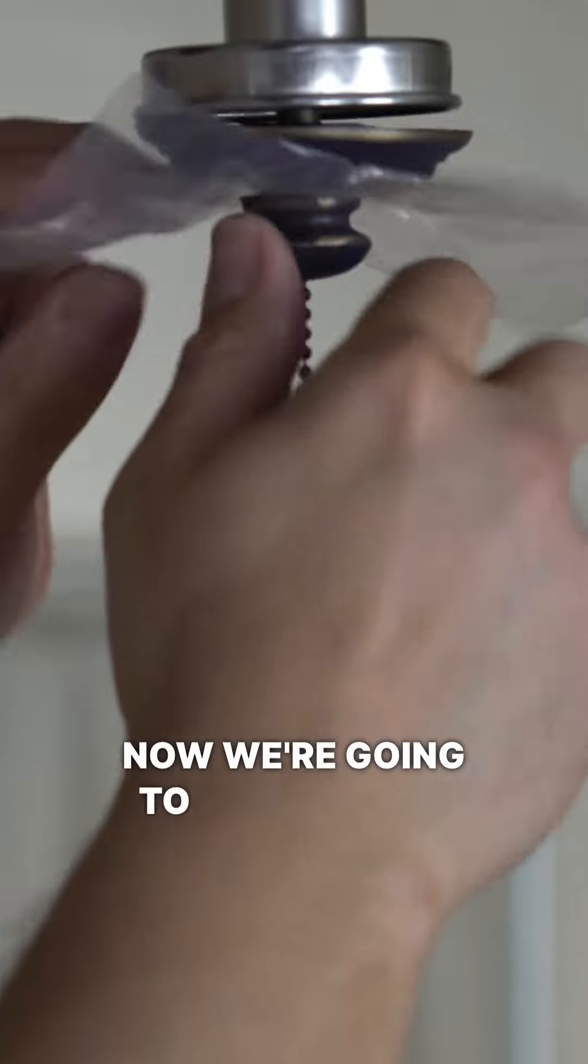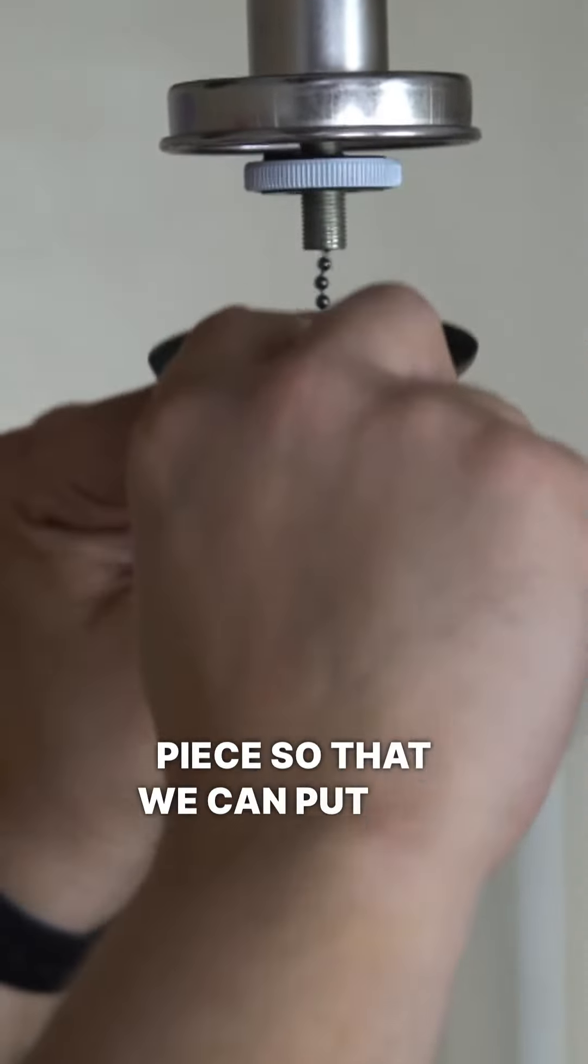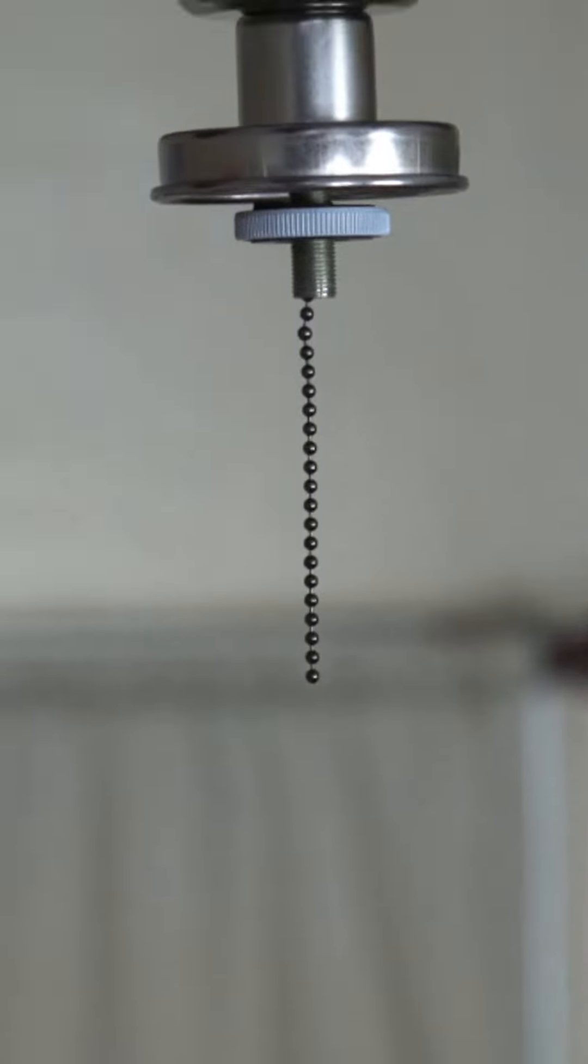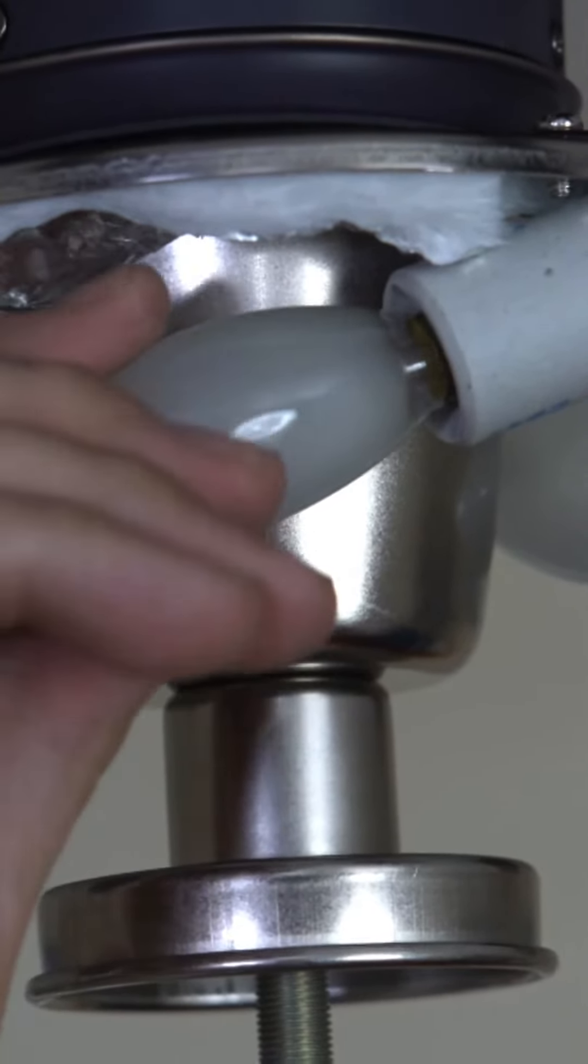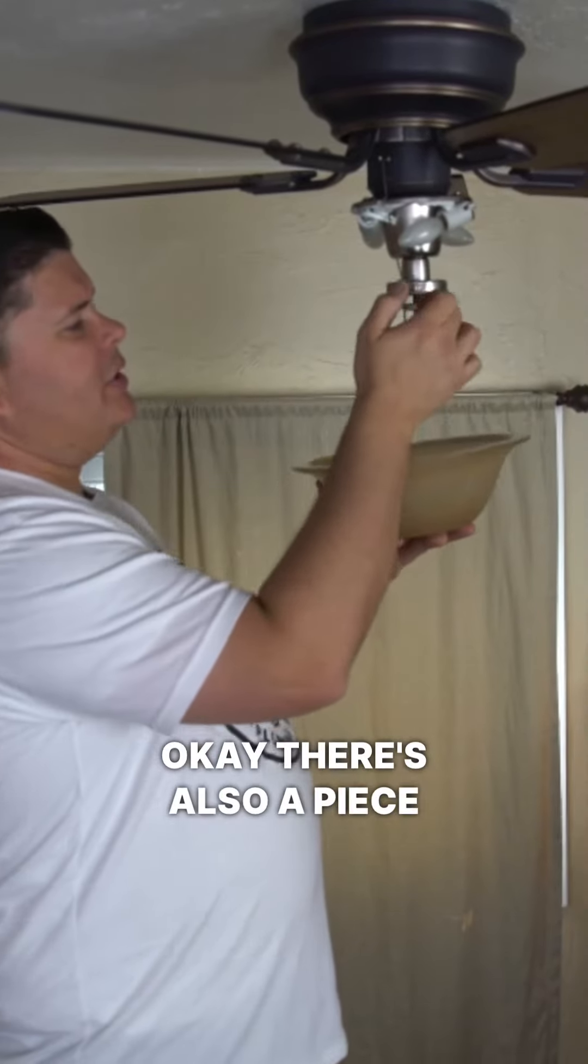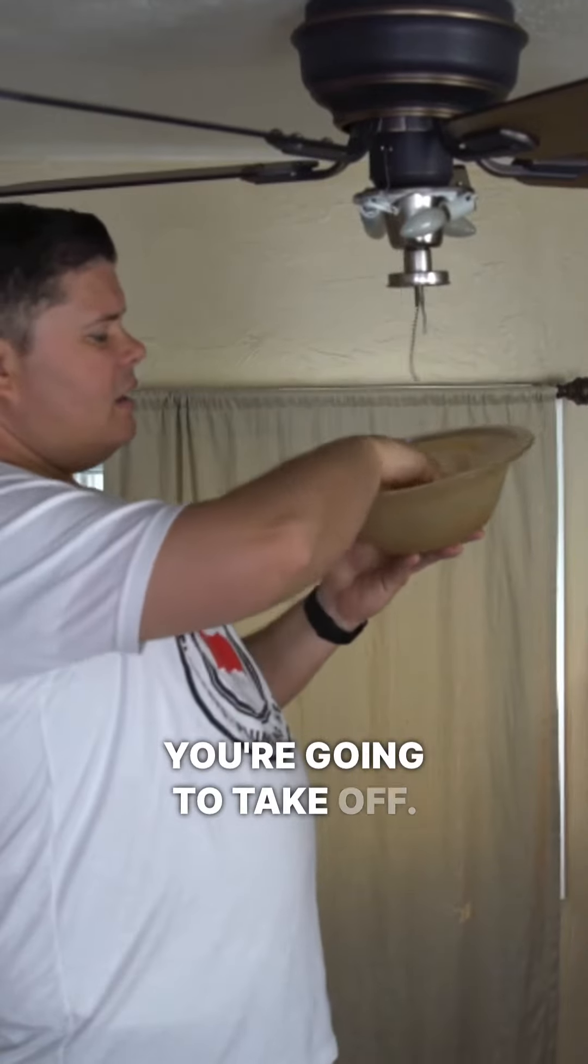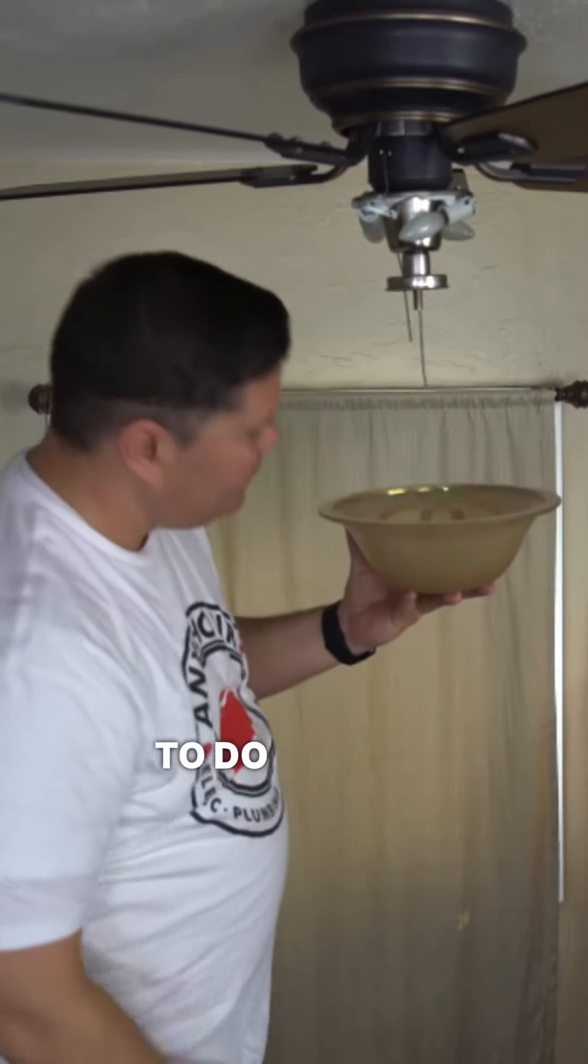Now we're going to remove this piece so that we can put the lighting kit up on. So we'll put the light bulbs in. Okay, there's also a piece that's on this all thread that you're going to take off because we're going to fish.